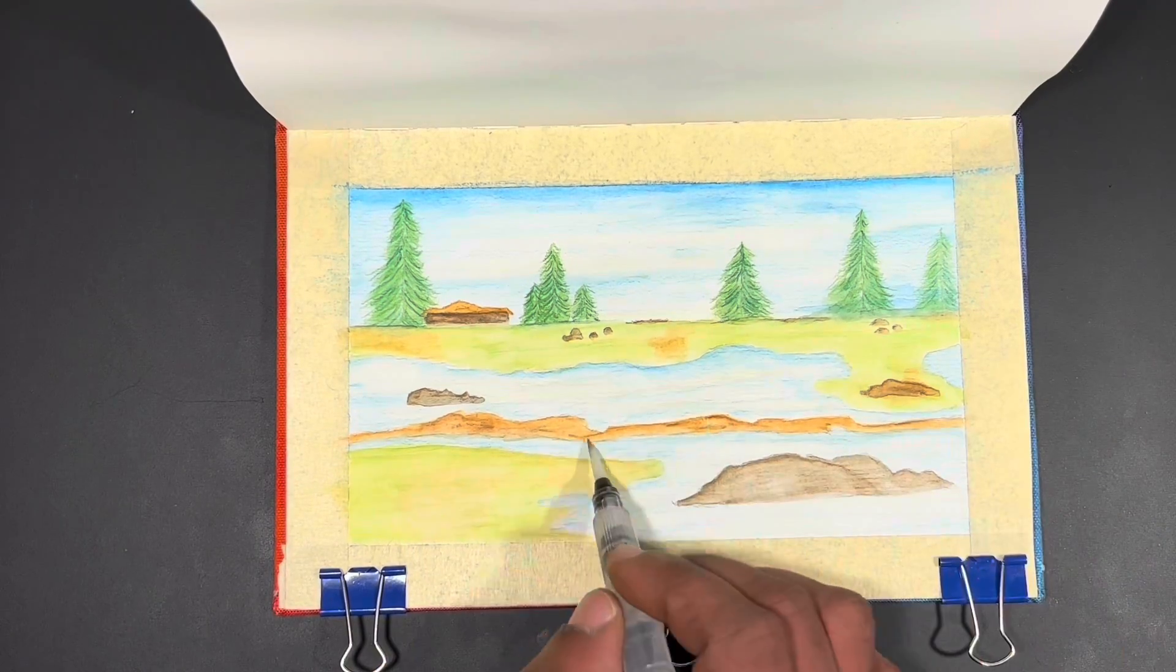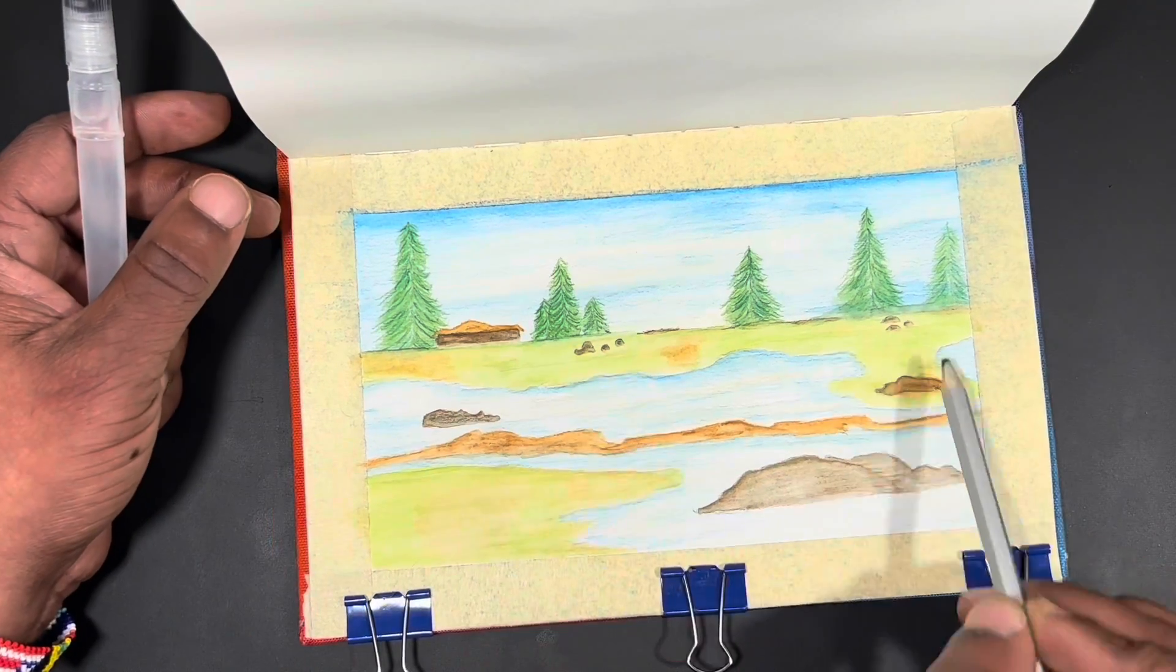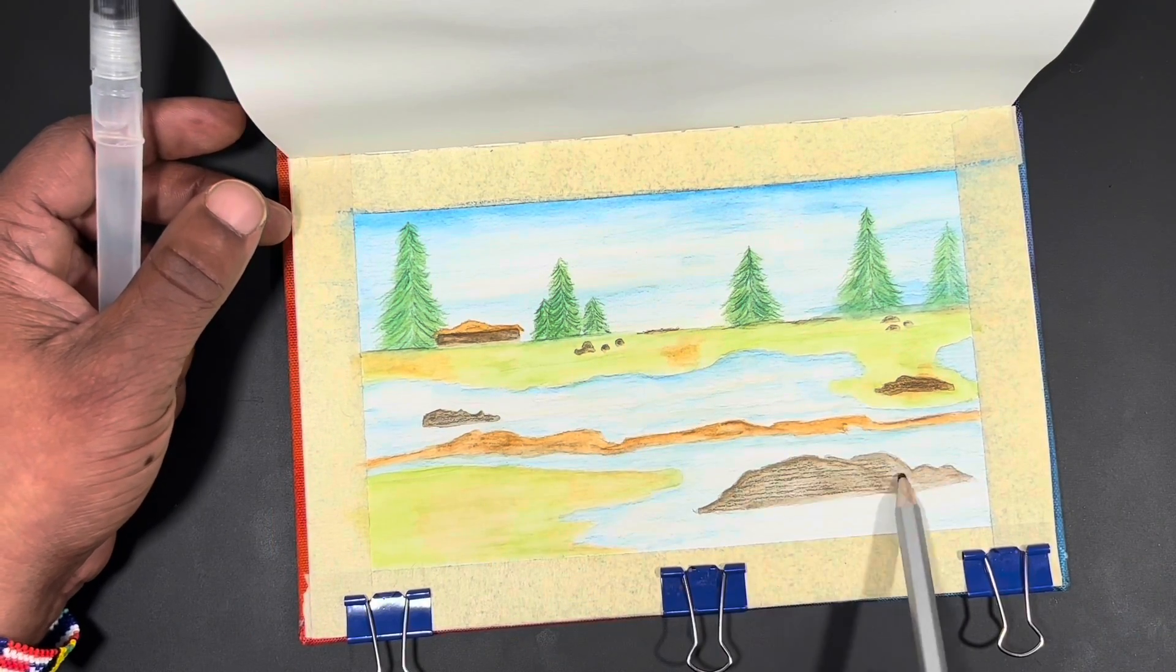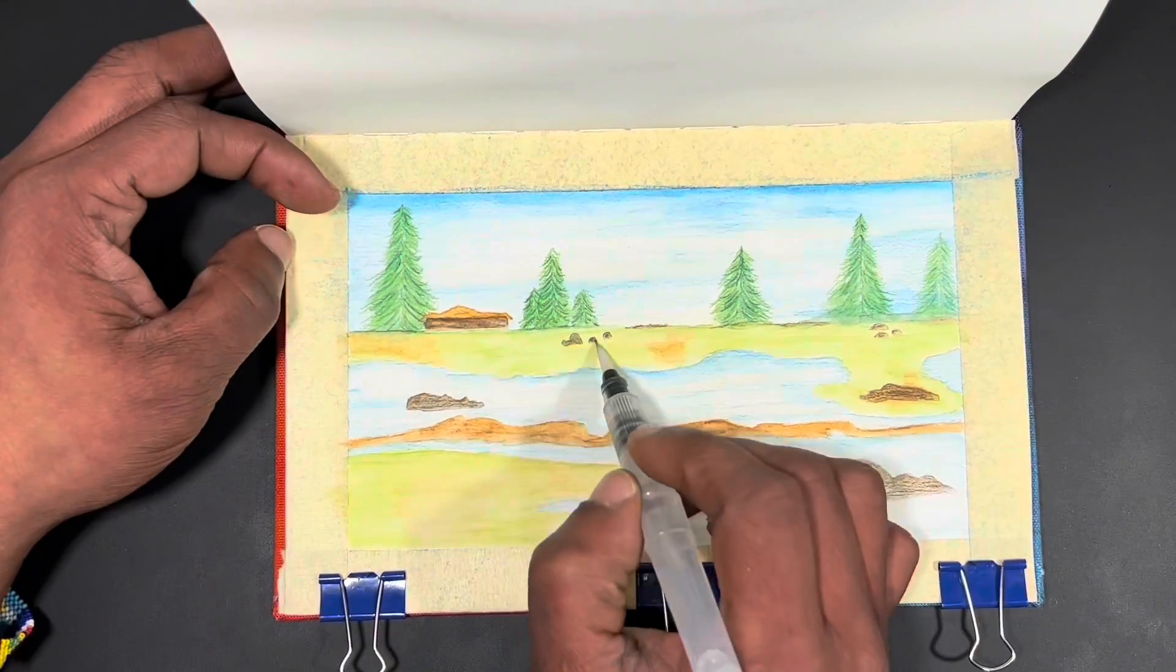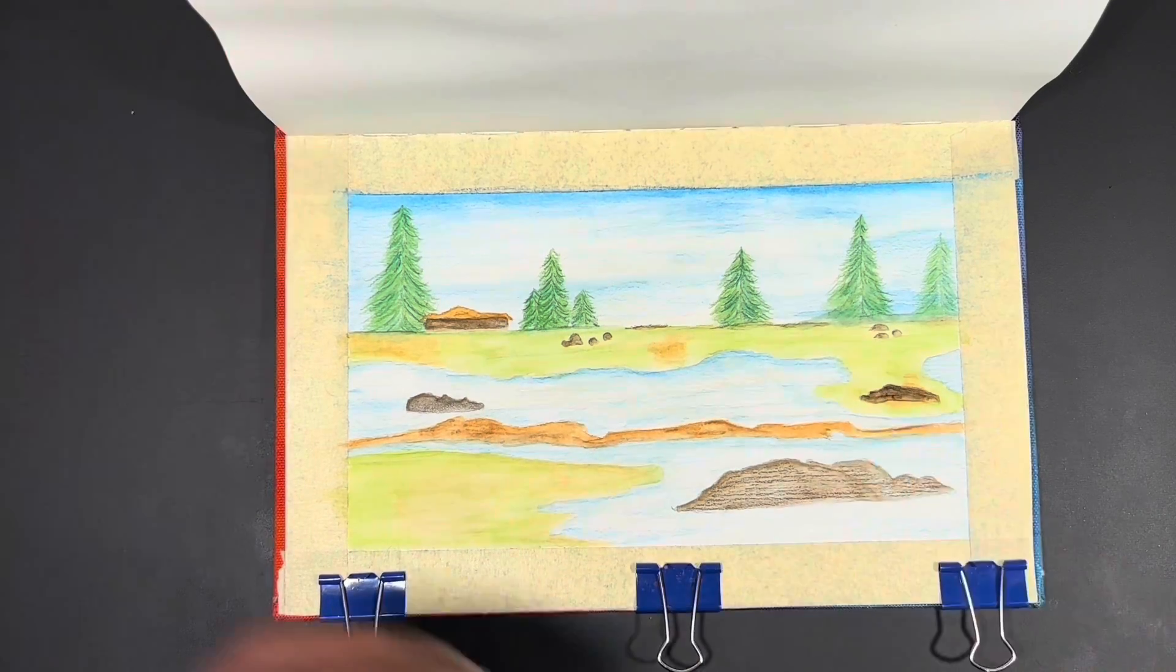You're going to see me go in and enhance the little strip of land with some more of that color that was burnt sienna or maybe like a Venetian red or Indian red. It's in that family of brown, reddish browns. So that all worked out really nicely.